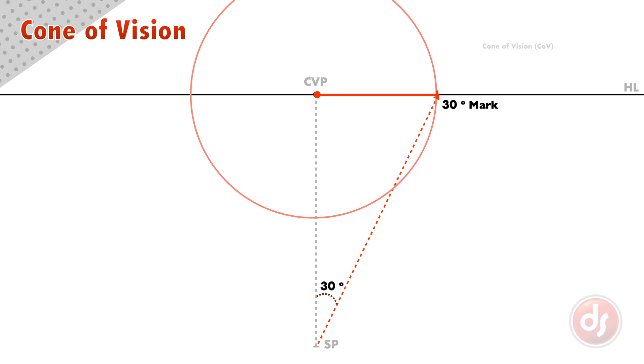This circle represents the cone of vision coming from the viewer's eyes and hitting the picture plane. The inside of this circle is the optimal area for making our perspective look normal to our eye. Because the cone of vision sits at 30 degrees on either side of the center of vision, we call this a 60 degree cone of vision.